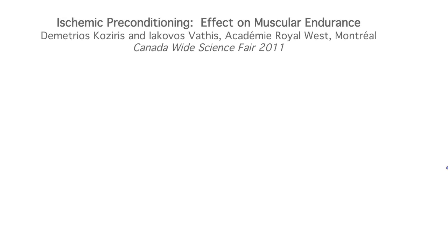Let's look at one more example of an experiment. This story is slightly adapted from a project presented by two Montreal students at the 2011 Canada-wide Science Fair, which was the winner of the Statistical Society of Canada Award for excellence in the use of statistical methodology. The students were interested in ischemic preconditioning, a technique to create resistance to loss of oxygen through loss of blood supply to tissues. Ischemic preconditioning works by applying brief episodes of restricted blood flow to protect against damage from a subsequent longer episode.